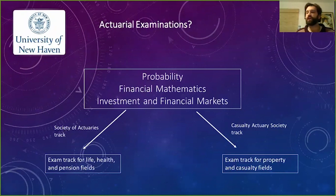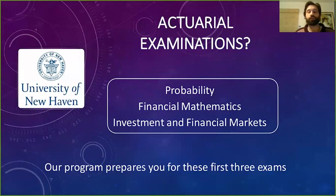The other track is run by the Casualty Actuaries Society, and those are for those who work in property insurance and casualty insurance. Regardless of which track you ultimately end up taking, the first three exams are the same for everyone, and so in our program we focus on preparing you for these first three exams.